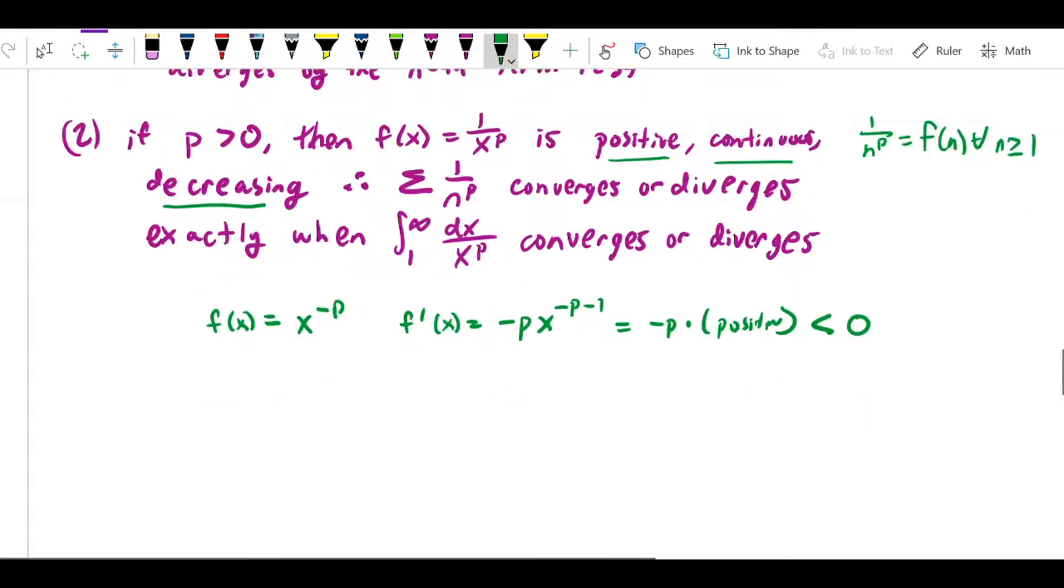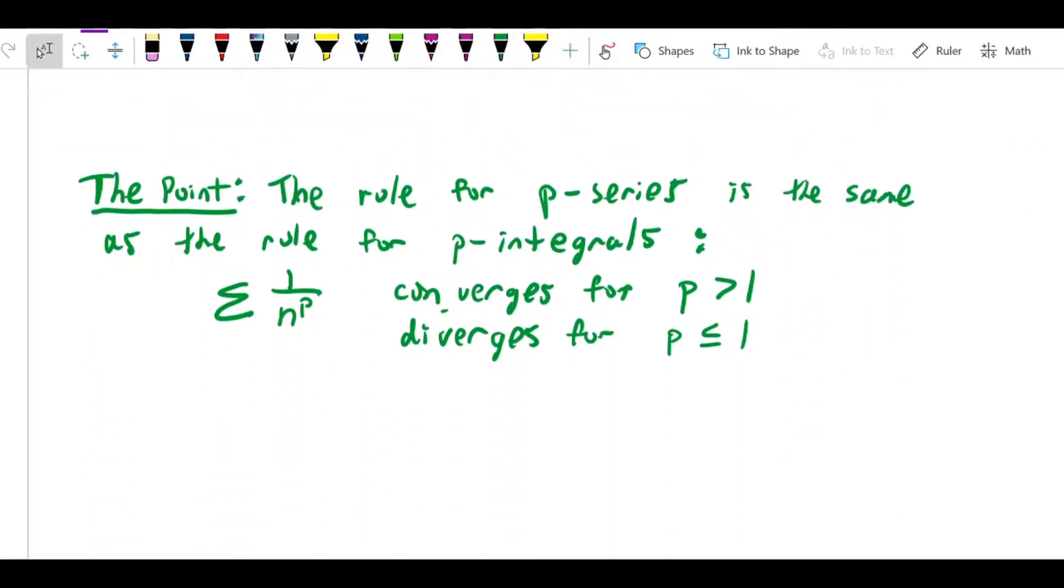So what's the point of this? Here's the point. The rule for p-series is the same as the rule for p-integrals, which is to say that the sum from n equals 1 to infinity of 1 over n to the p converges for p greater than 1 and diverges for p less than or equal to 1. So it's the same rule that we use for p-integrals.